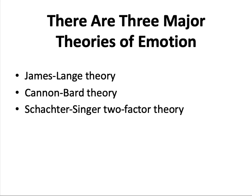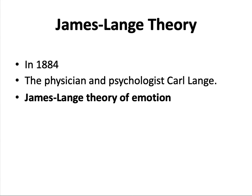There are three major theories of emotion: the James-Lange theory, the Cannon-Bard theory, and the Schachter-Singer two-factor theory, each of which will be covered in detail.